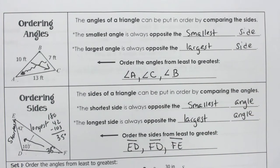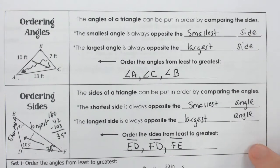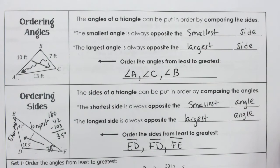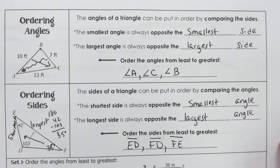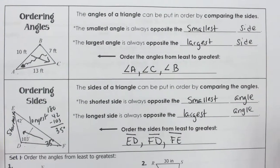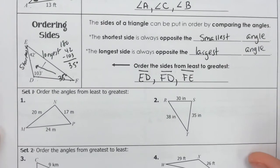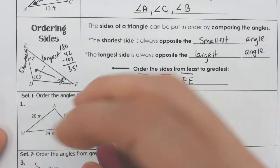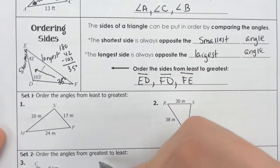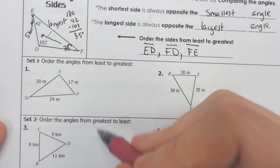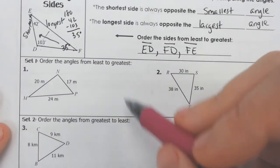We're going to do a few more quick examples of this. These are relatively easy. Most of the time people just cheat and look for which one's the smallest side or which angle looks like it's the biggest. Be careful because sometimes they change it from least to greatest to greatest to least. So we're just going to do one more of these.